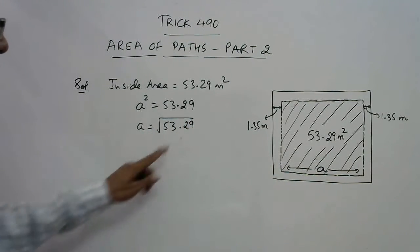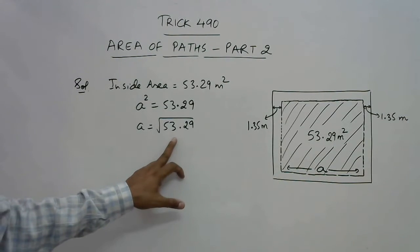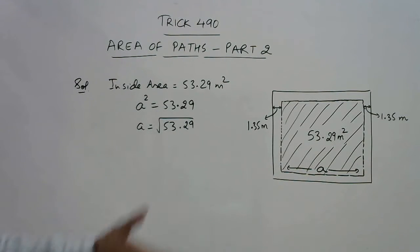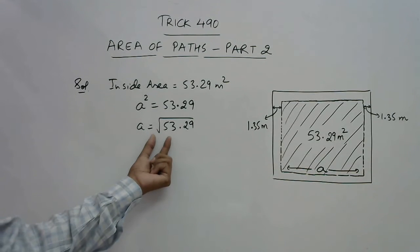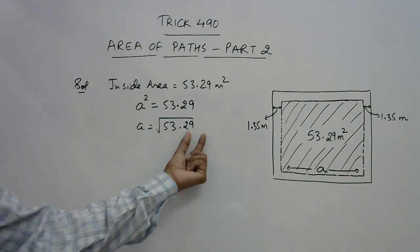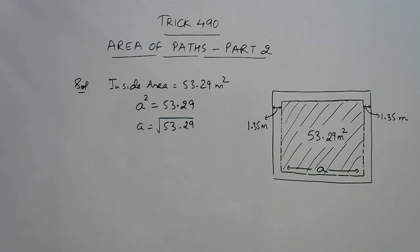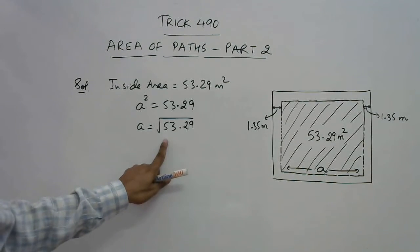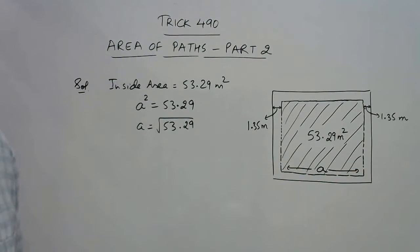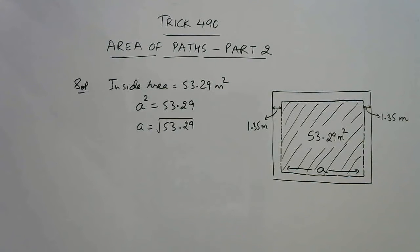There is a problem - we have to find the square root of this number 53.29. How do we do this? Again we are going to use a shortcut for finding the square root of this number. See, two digits on left side and two digits on right side, so in the answer we are going to have one digit on the left side and one digit on the right side.